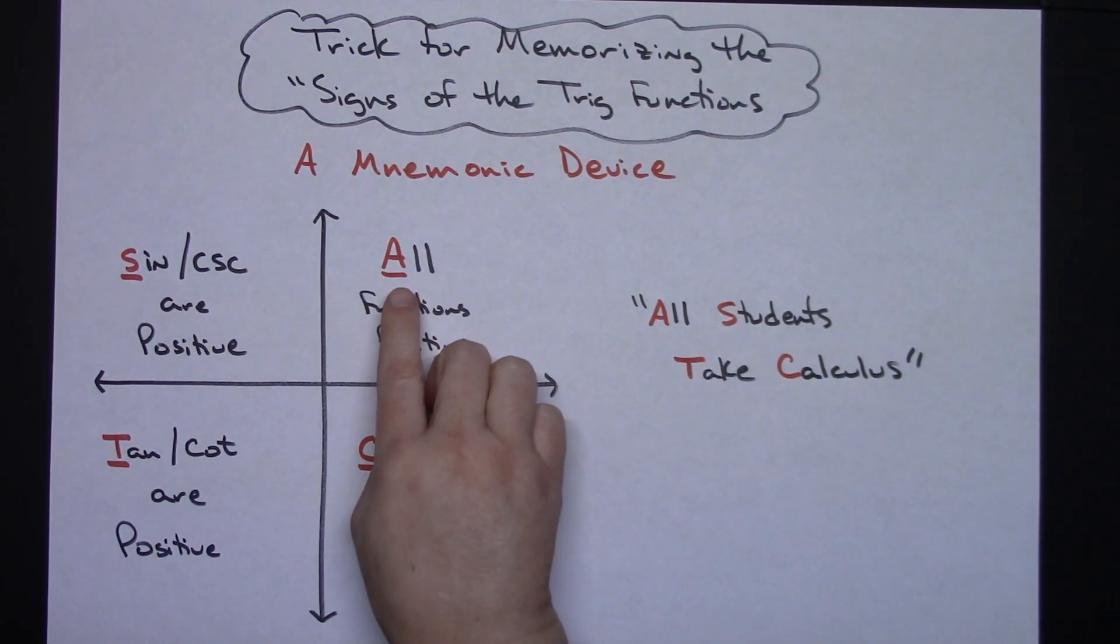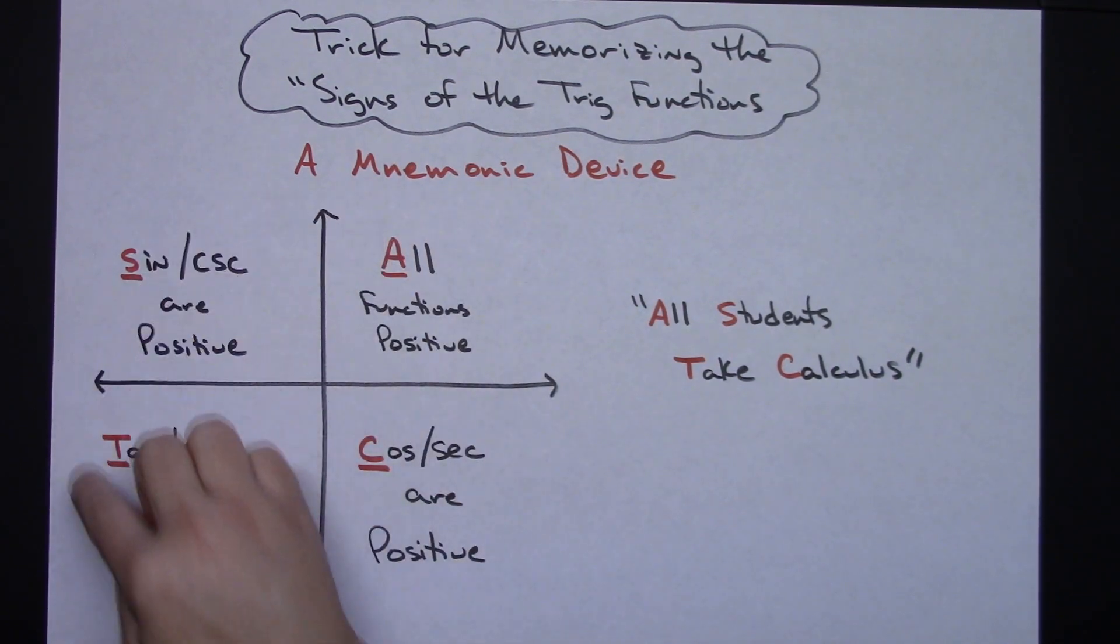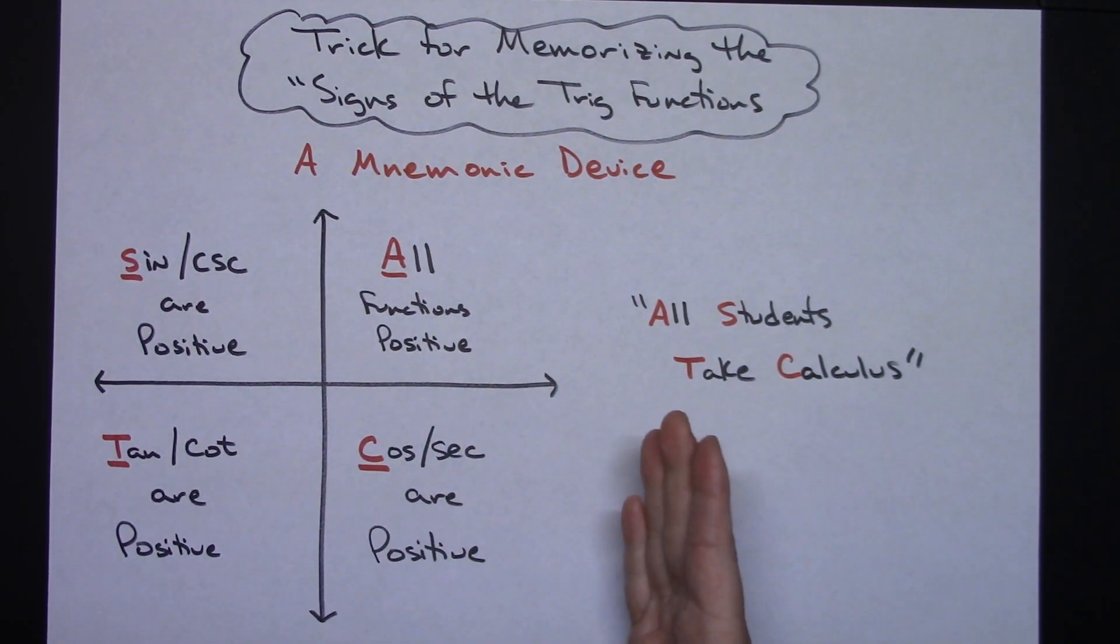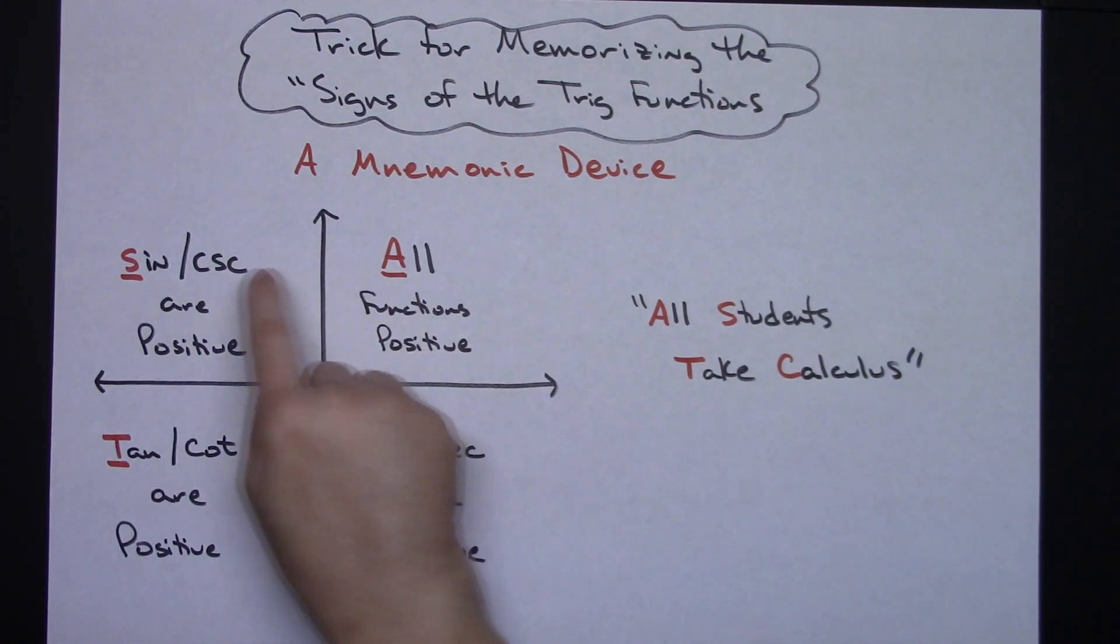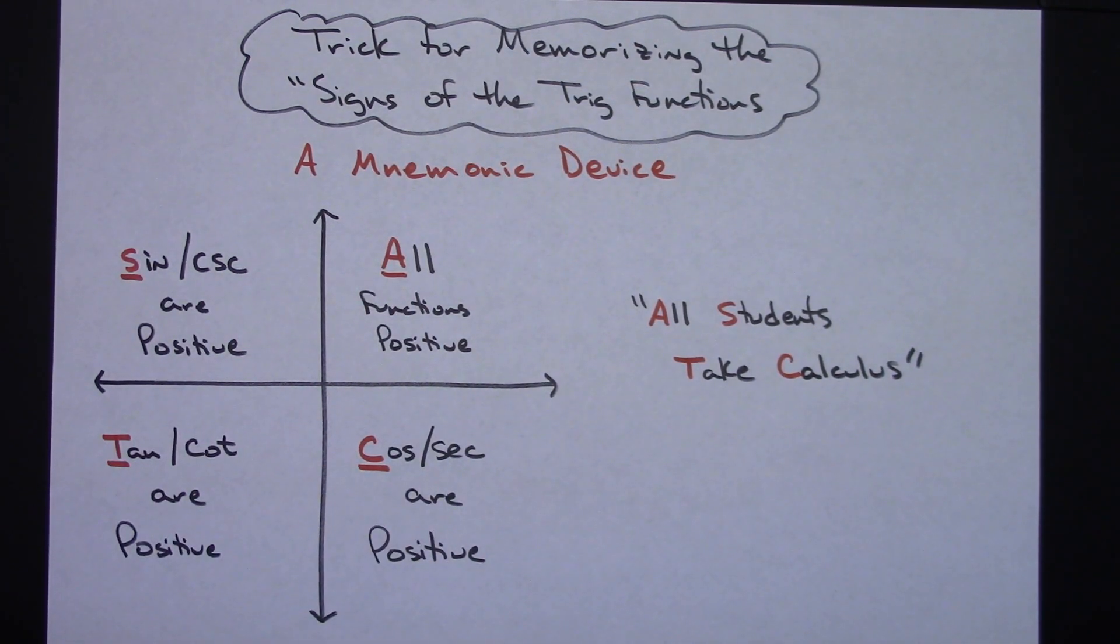Each one of those letters correspond to going counterclockwise around our coordinate plane, which is the way we number our quadrants anyway. All students take calculus. So as long as you can remember those four, then we're good to go.